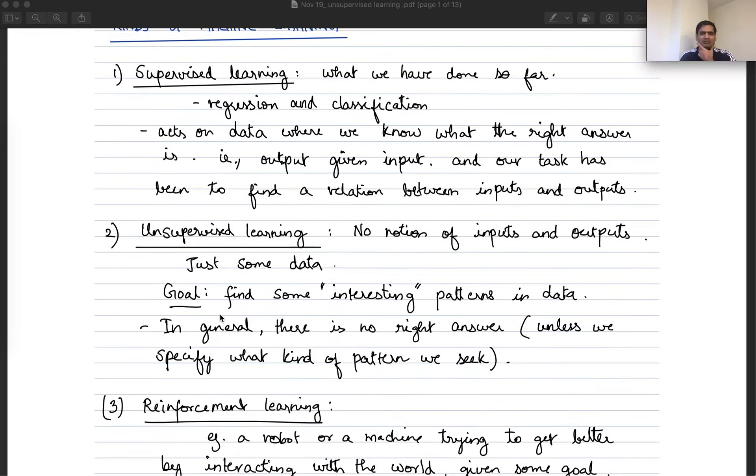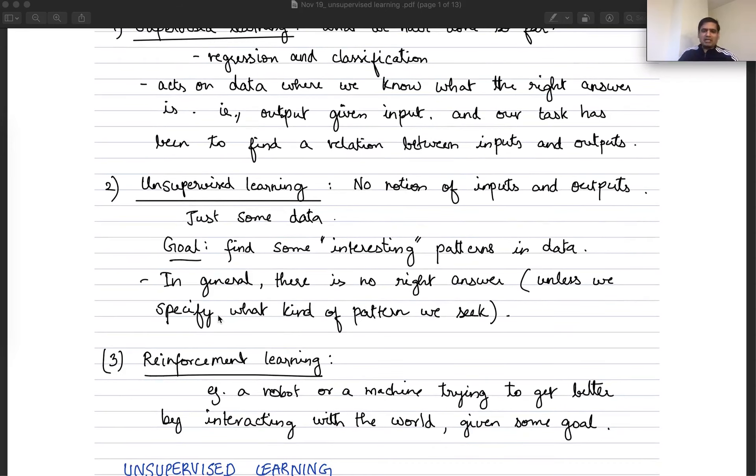And then the third kind of machine learning, among perhaps many more, but these are the three main categories, is reinforcement learning. This is something that we will talk about over the last three lectures of the course. Reinforcement learning, an example of that is having a robot or a machine or more generally an agent trying to get better by interacting with some goal or criteria that the agent has.